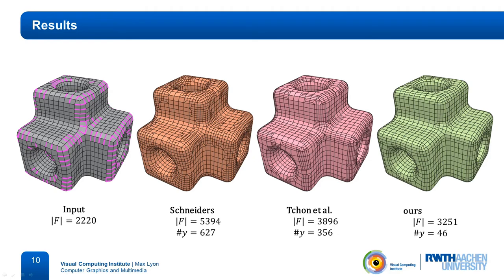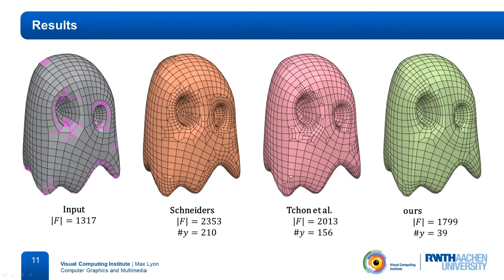Here we compare with Schneiders' and John's algorithm. Similar to the rocker arm, edges are split in order to improve surface approximation. Since Schneiders' algorithm can only refine isotropically, it introduces many elements and singularities. John and colleagues split only a minimal number of edges, but since they perform free refinement, they end up with more elements than we do, and many singularities are added which could have been avoided by splitting a few more edges. On the ghost model, Schneiders and John produce almost twice as many faces and 50-to-4 times as many singularities as our method.